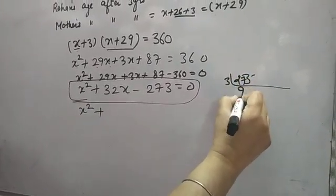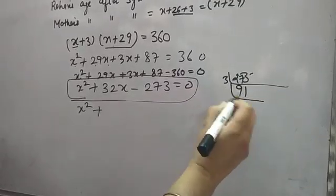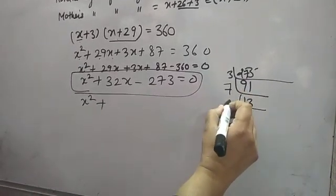273, divisible by 3. Here we get 91. Now see, 7 times 13 is 91. So here comes 7, here comes 13.